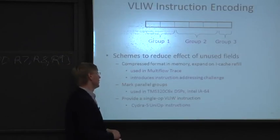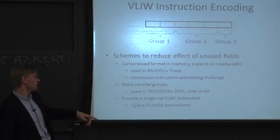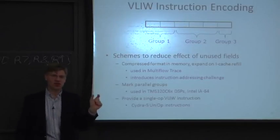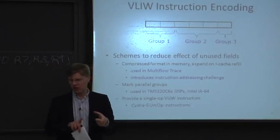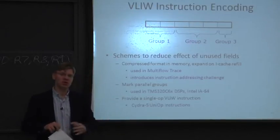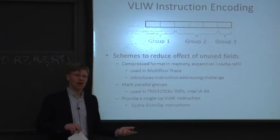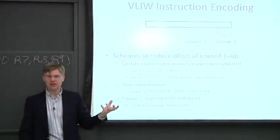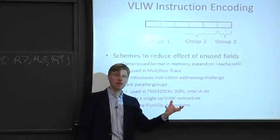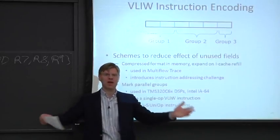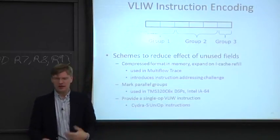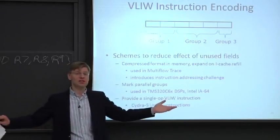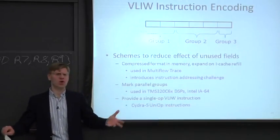So how do we solve this? A couple of different solutions. Cydra 5 added a single-operation instruction that used a much smaller amount of memory, effectively reducing instruction cache pressure. There were also compressed formats in memory — you hold instruction sequences in memory compressed, and when you pull them into the instruction cache, they expand to the fully expanded version, like a compression algorithm.